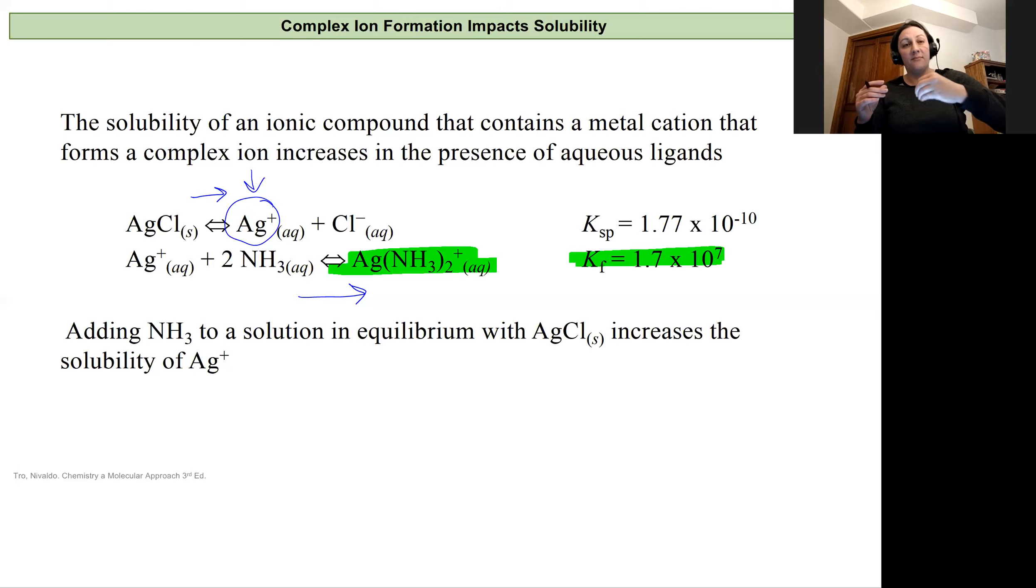This will give more silver ions into the solution, and that's just going to drive the formation of more silver ammonium complex ion. The effect of this is that we're going to take this insoluble salt silver chloride and dissolve it by adding ammonium. So let's look at this. It's pretty cool.